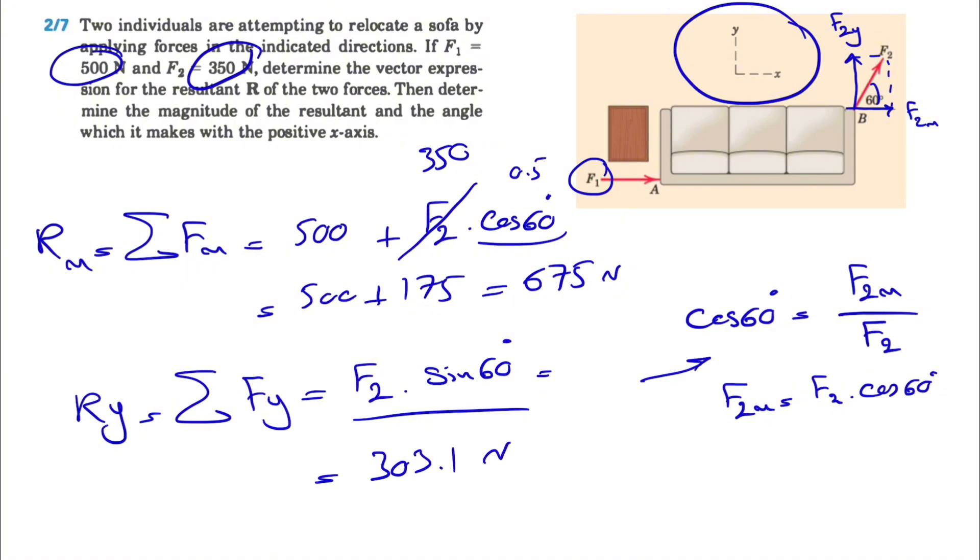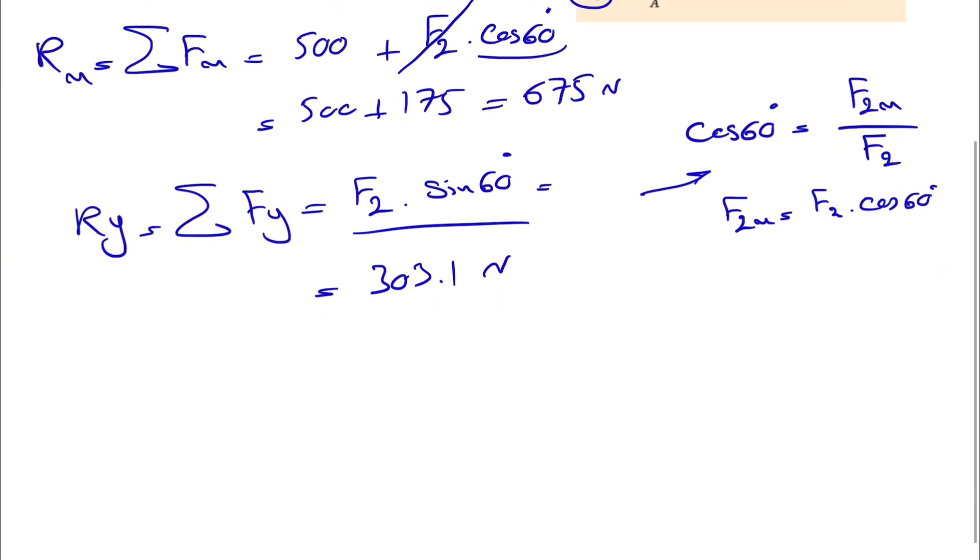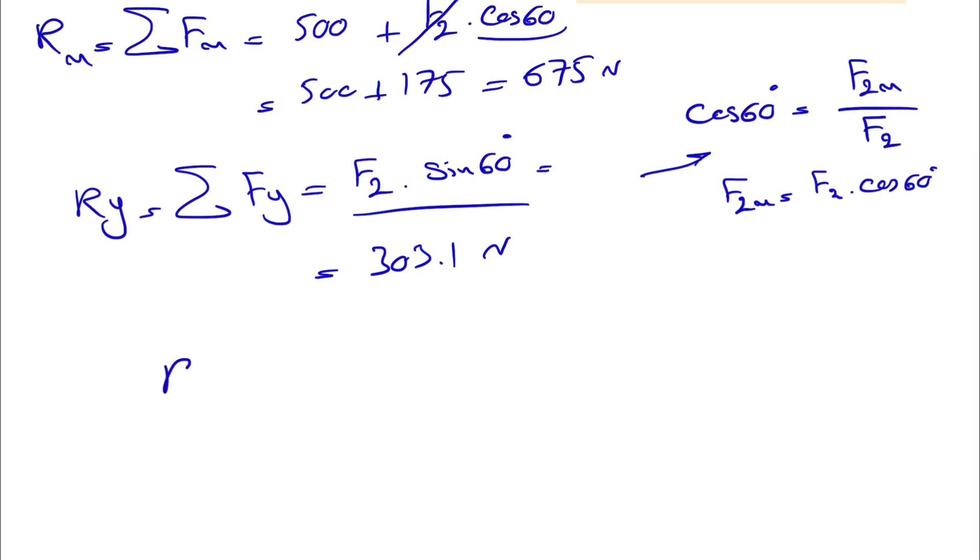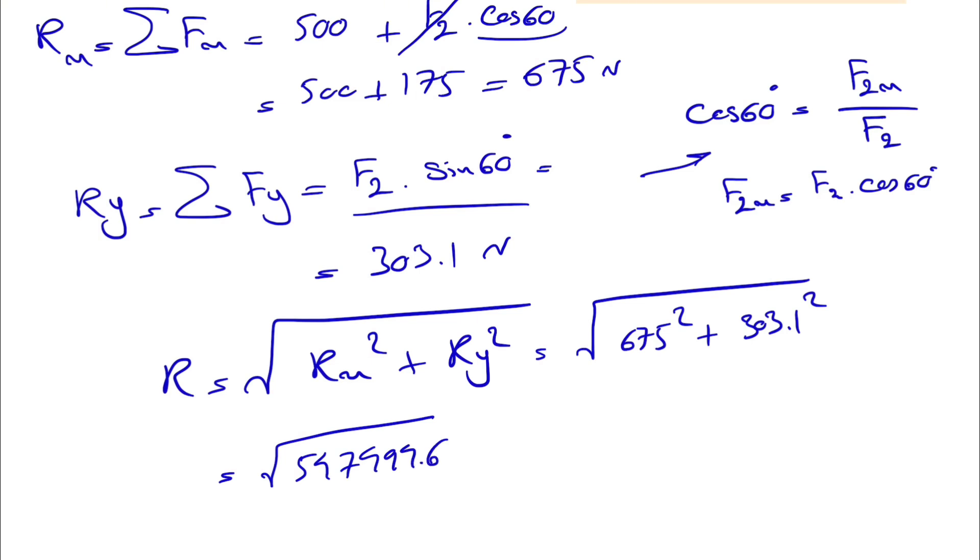That's going to give us the y component. If you want to find the resultant, we simply have square root of Rx squared plus Ry squared, so square root of 675 squared plus 303.1 squared. This will be the square root of 547494.6, and this will be 739.9 or 740 newtons.